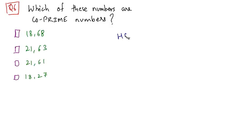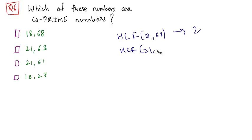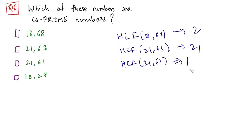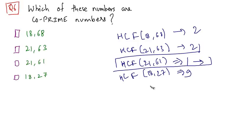If you calculate the HCF of 18 and 68, it comes out as 2. The HCF of 21 and 63 comes out as 21. The HCF of 21 and 61 is 1, and the HCF of 18 and 27 is 9. So the highest common factor of 21 and 61 is 1. Hence these two numbers are co-prime numbers, and the correct option is option 4.